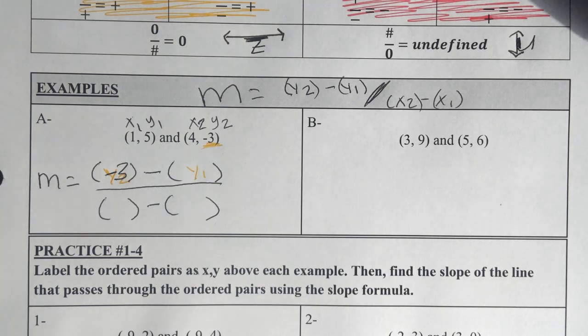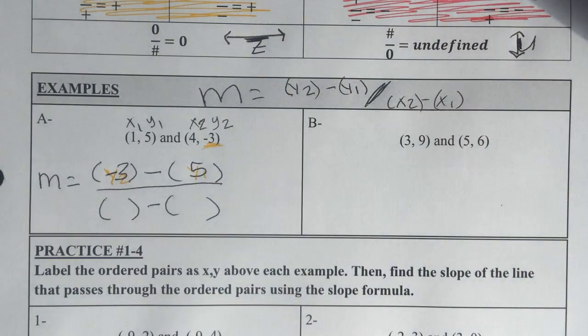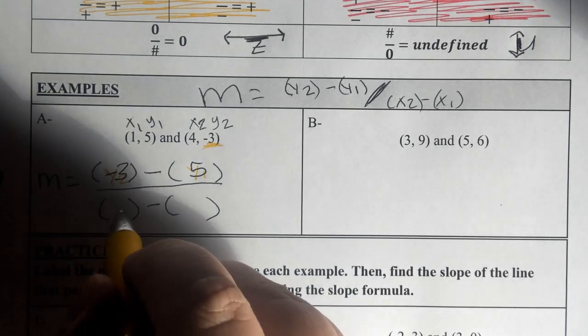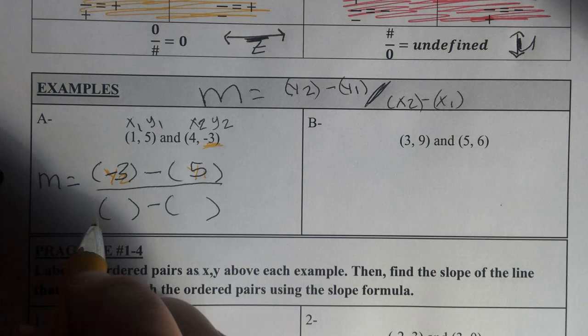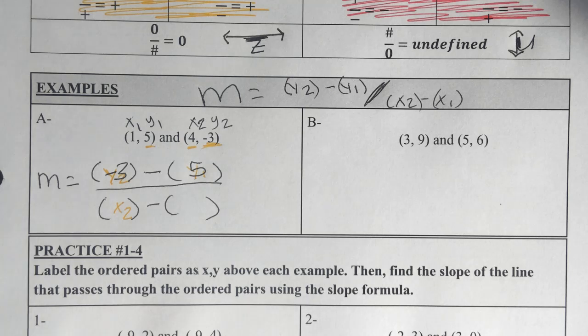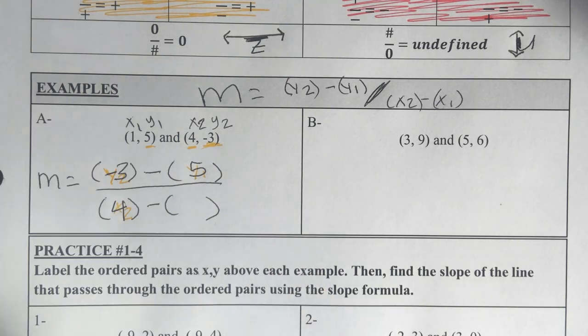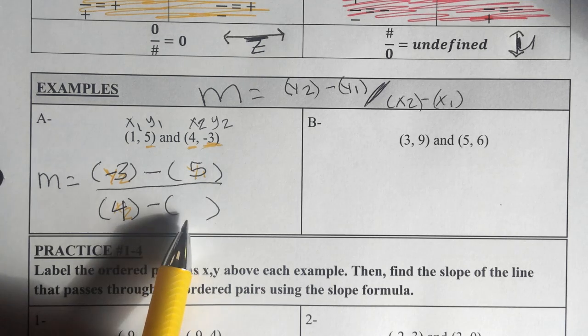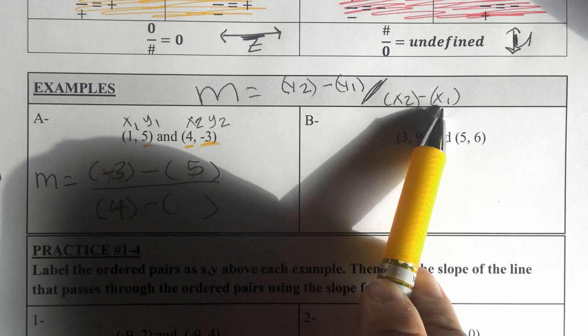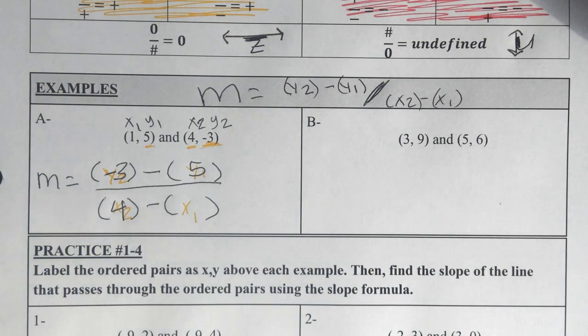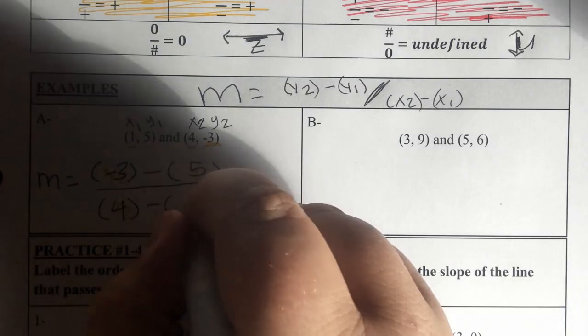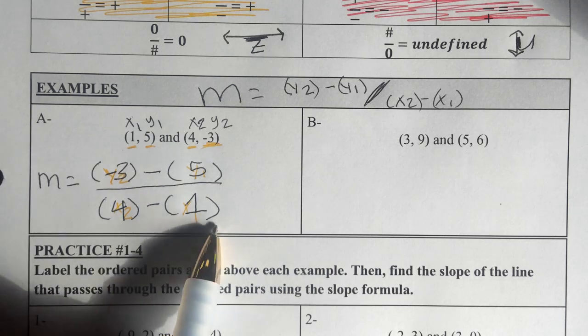The second set of parentheses in the numerator on the right side of the minus sign is y1. So this set of parentheses is in place of y1. Well, we know that y1 is 5, so I can put a 5 in that set of parentheses. Okay, the denominator on the left side of the minus sign has parentheses in place of x2. Well, we know that x2 is 4, so I'll put a 4 in those parentheses minus this last parentheses on the right side of the minus sign in the denominator is in place of x1. And we know that x1 is 1, so we'll put a 1 in that set of parentheses.